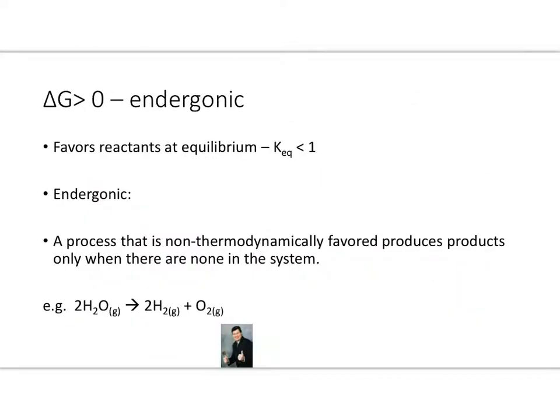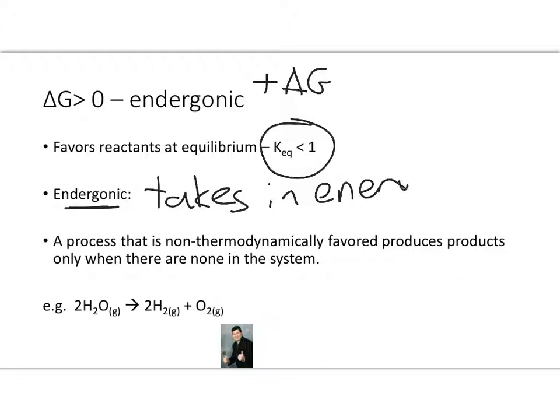Okay, so if we have a positive delta G, that means that our reactants are favored. And we have an equilibrium constant that is less than 1. Means that we favor our reactants. This reaction is going to be called endergonic. What is that? Well, it's basically the exact opposite of exergonic. So endergonic means this: it means that it takes in energy. And in this case, you may be thinking of something like an endothermic reaction.